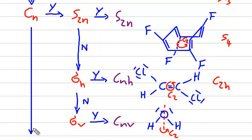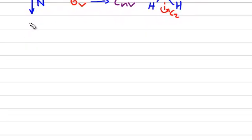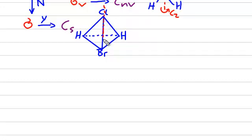So far all our molecules had a rotation axis. Now, what happens if we don't have any rotation axis? Let's see if we find at least a reflection plane, no matter in which orientation. If there is one, we call this point group CS. Let's take the tetrahedron as our example structure — a derivative of methane. Here we have the hydrogen atoms, and we substitute one hydrogen atom by a chlorine atom and here one by a bromine atom. The reflection plane could go through these atoms here.